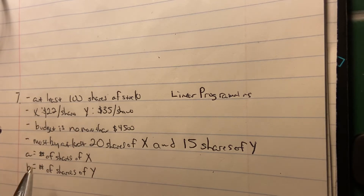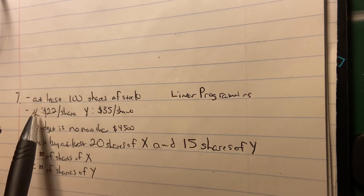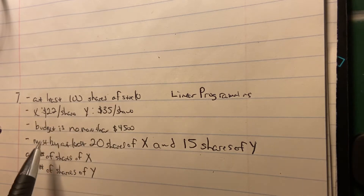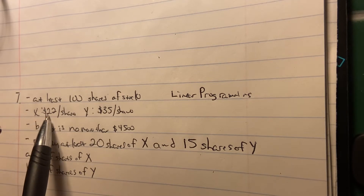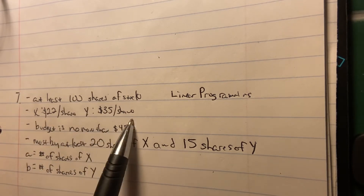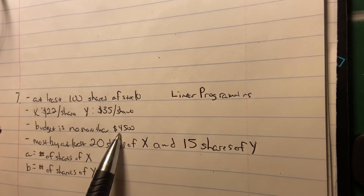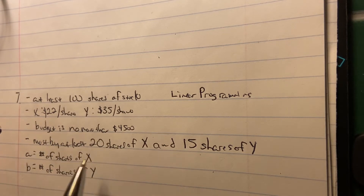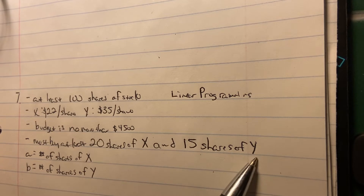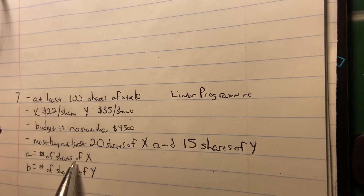What I did is I took the question and broke it down into bullet points. The first bullet point is that this person needs to buy at least 100 shares of stock. Stock X is $22 per share, stock Y is $35 per share, your budget is no more than $4,500 — that's your max — and you must buy at least 20 shares of stock X and 15 shares of stock Y.